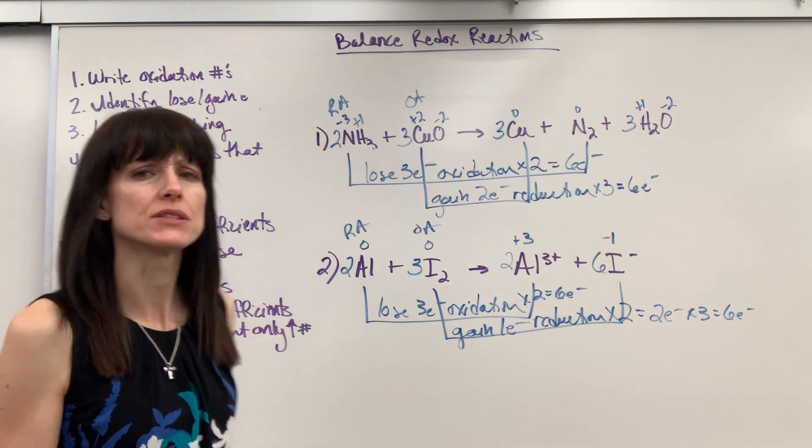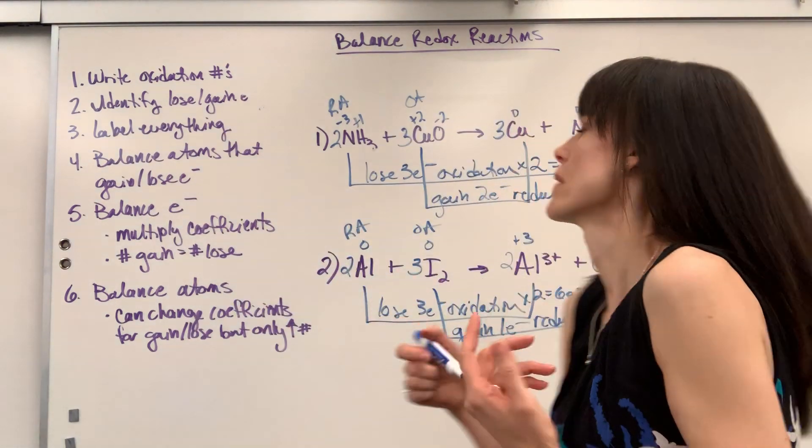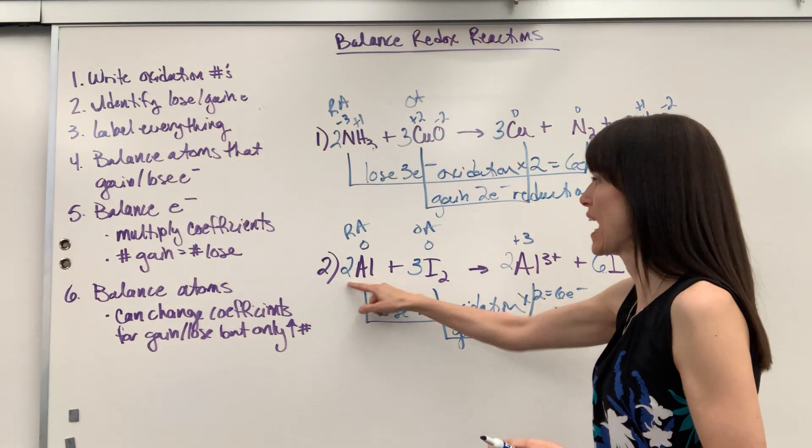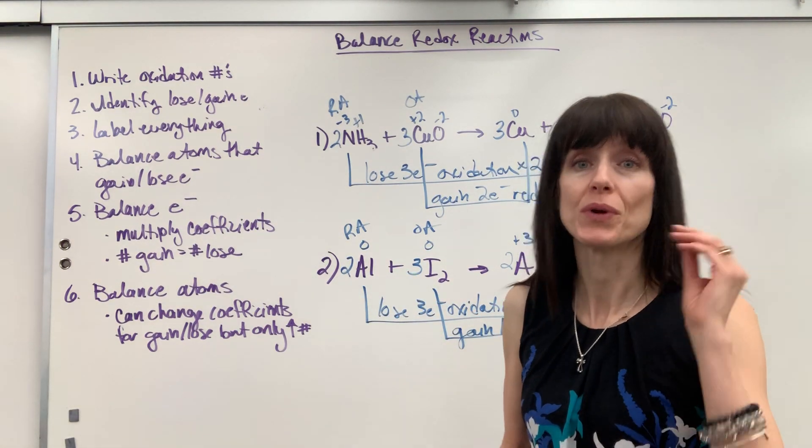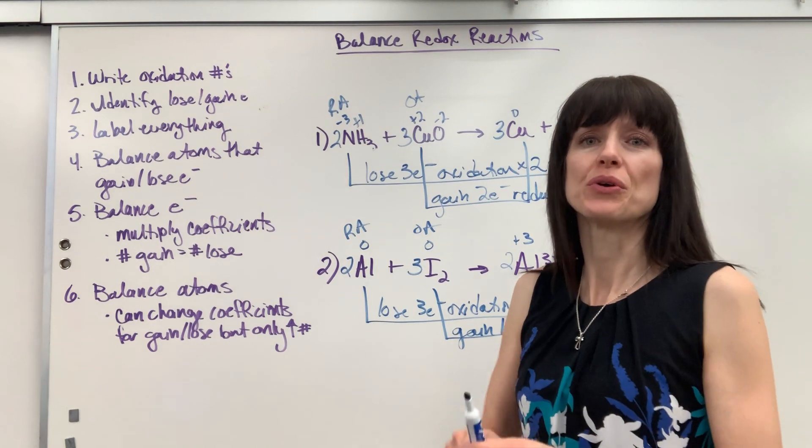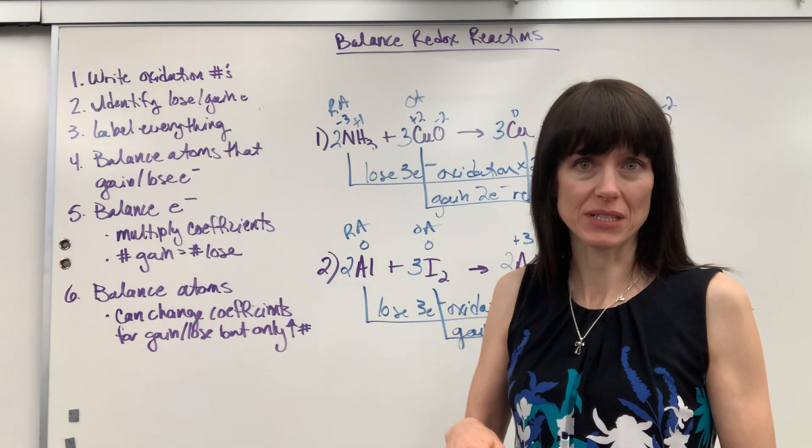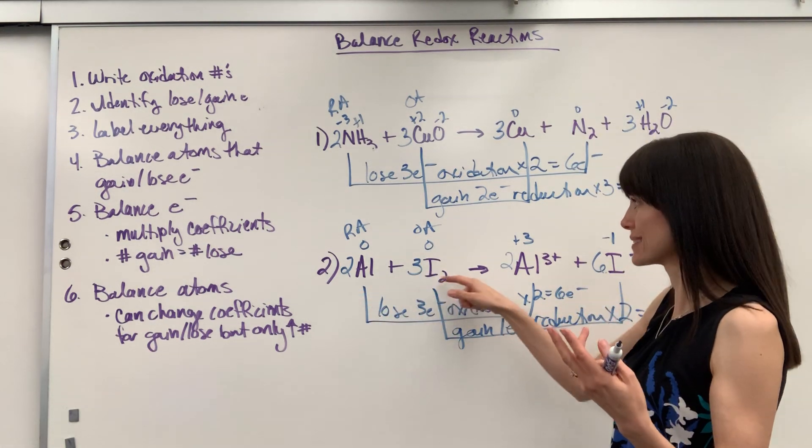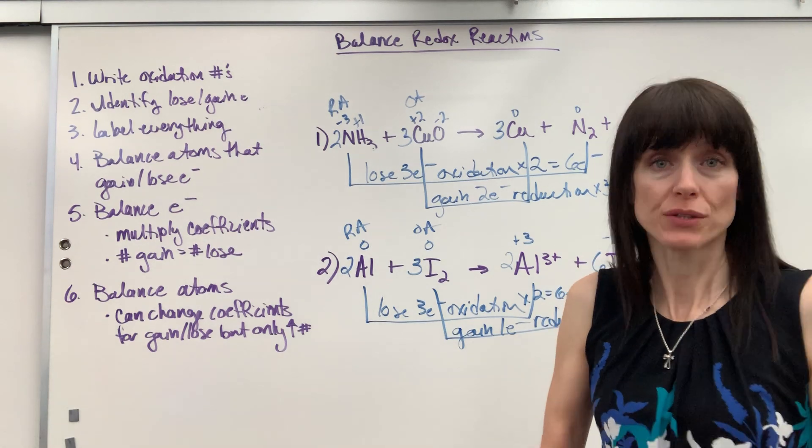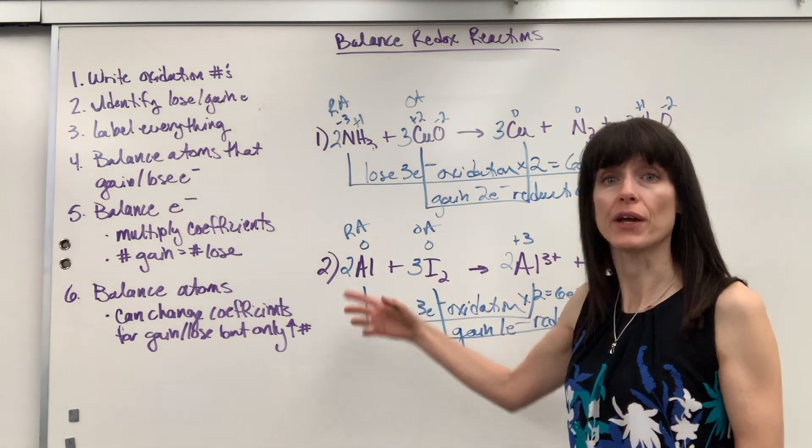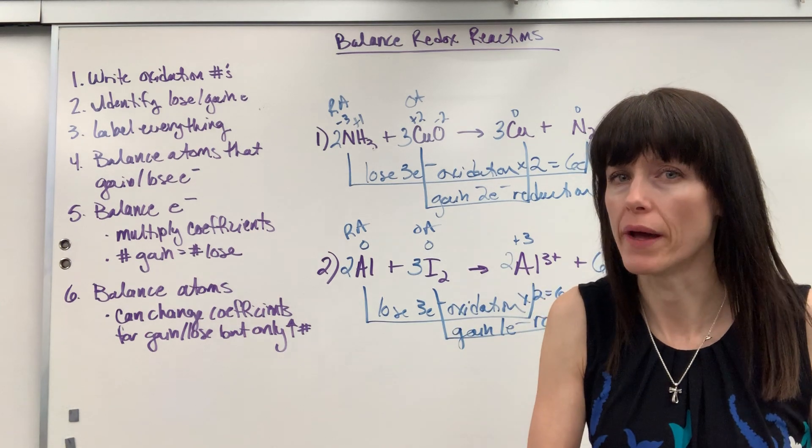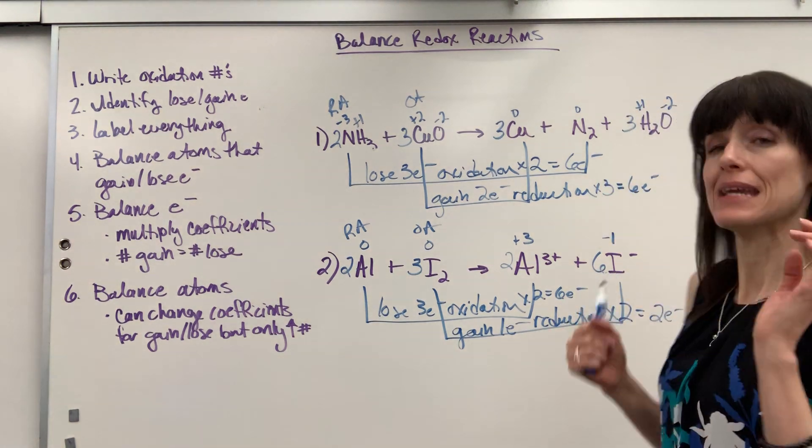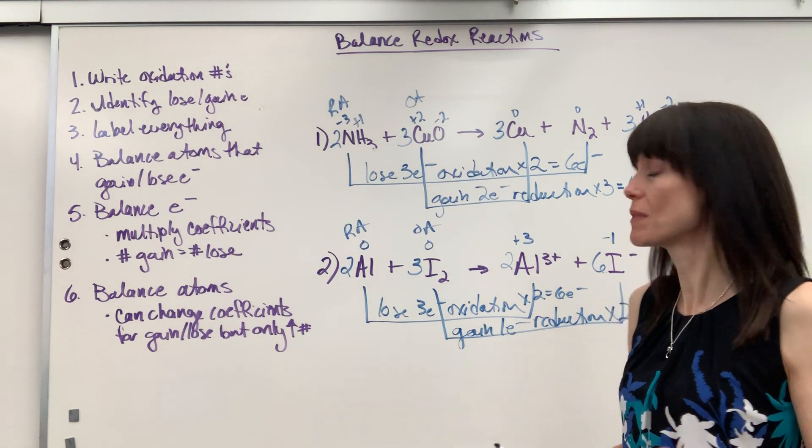Now a question sometimes that students will ask me, they'll say, Mrs. Love what if I balance my electrons and then when I go to balance the atoms I have to change those numbers? It's okay with one contingency. You can only increase the coefficient. You can't decrease the number. This is showing us minimum two aluminum and six of the iodine are part of this redox. So if I had to for some reason put that to a three or four I could. I just couldn't make it a one. So you can change these numbers after you balance electrons. It's just you have to go higher.